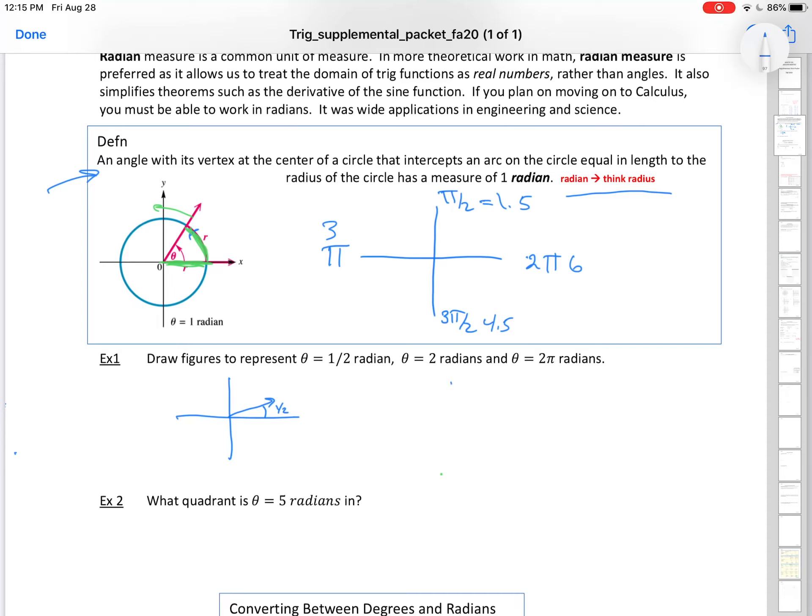Two radians - what quadrant would two radians be in? It's going to be bigger than 1.5 but less than 3, so just worry about getting it in the right quadrant. This would be θ = 2 radians. Now radians don't have any units, so if you ever see an angle written without units, it's understood to be a radian. Two π radians would be right back here.